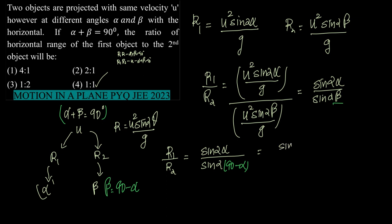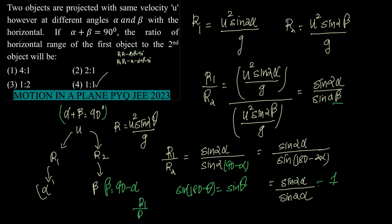Now see, what is sin(180° - θ)? Sin(180° - θ) is equal to sin(θ), in which case sin(180° - 2α) will also be equal to sin(2α). And sin(2α)/sin(2α) is 1, and therefore R1/R2 = 1/1, which gives us the correct option as 1:1.